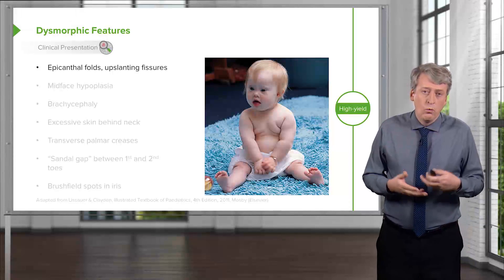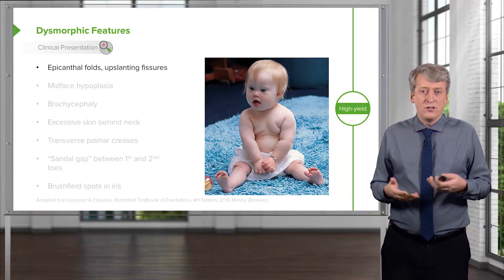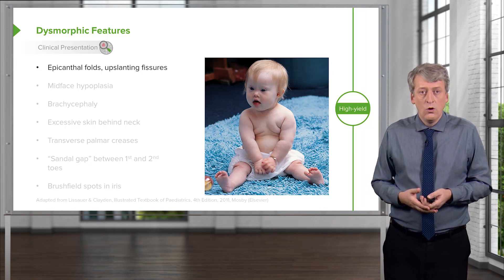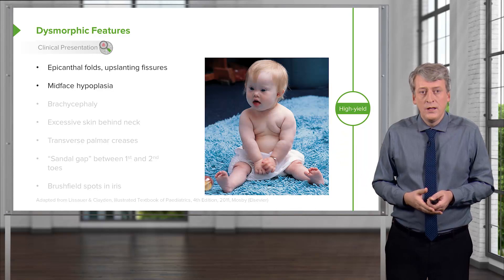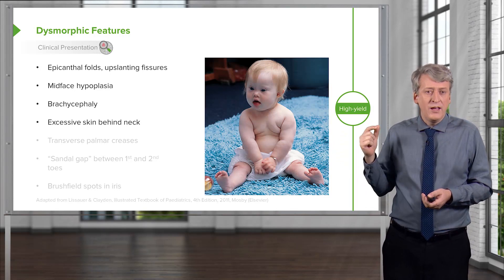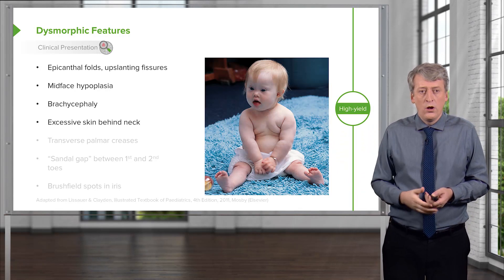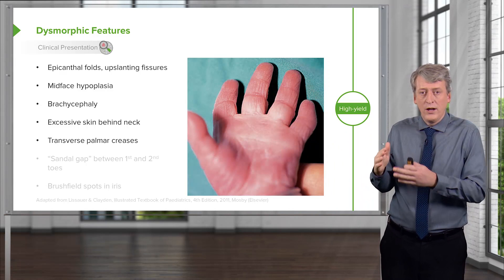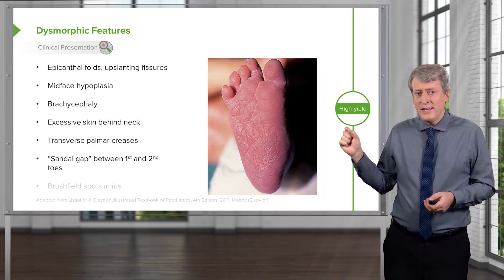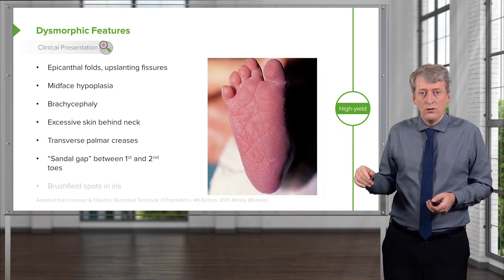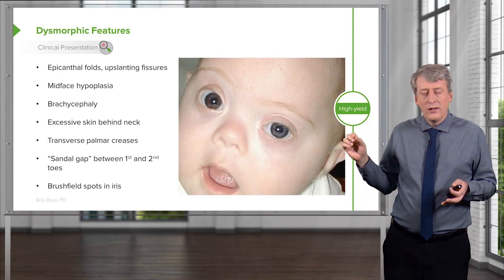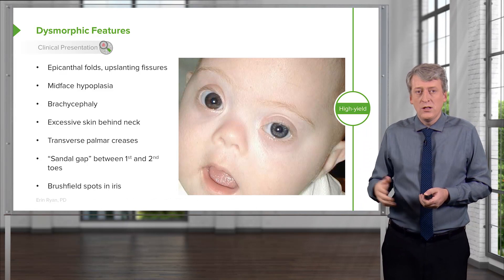If we have a baby and we're wondering whether they might have Down syndrome, this is a diagnosis frequently made on physical exam. Classic findings include epicanthal folds or upslanting fissures of the eyes, mid-face hypoplasia (visible in this child), brachycephaly, and excessive skin behind the neck — which can sometimes be seen in utero on ultrasound. You may also see a palmar crease, where the crease goes straight across the hand instead of branching as it normally does. There may be a slight gap between the first and second toes, and small white spots in the iris called Brushfield spots, which can be associated with Down syndrome.